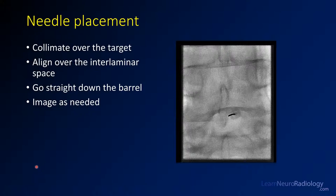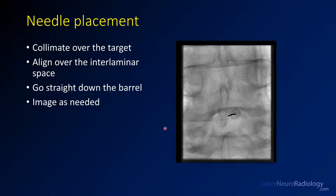Once you've viewed the whole lumbar spine, you can collimate over your target to decrease radiation dose. You'll end up with an image showing the spinous process, a magnified interlaminar space, and your needle — you can see the hub and the needle angled in. What you want to do is make the needle appear as point-like as possible, going straight down the barrel of the needle and minimizing angulation. Image intermittently as needed while making adjustments.